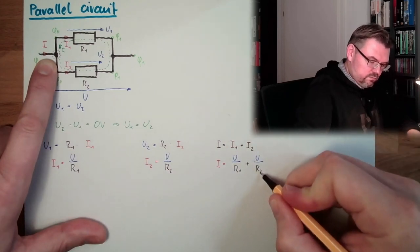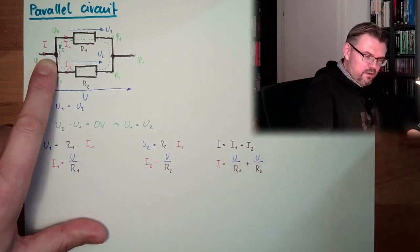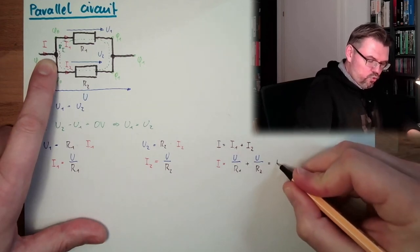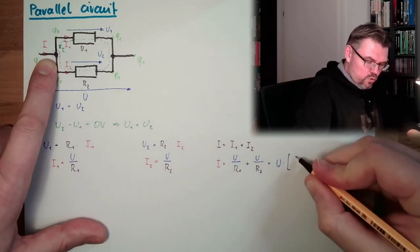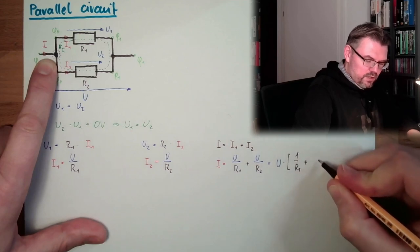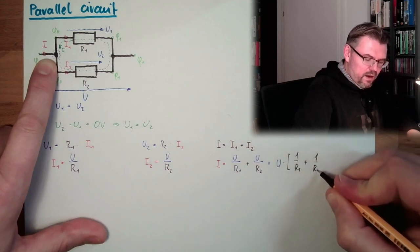Now I will simply get out this U, so we say this is U multiplied by 1 divided by R1 plus 1 divided by R2.